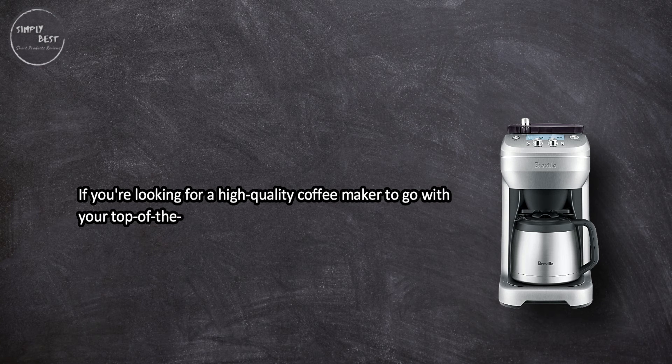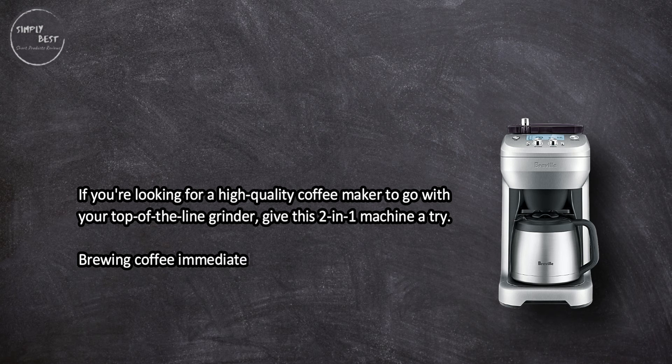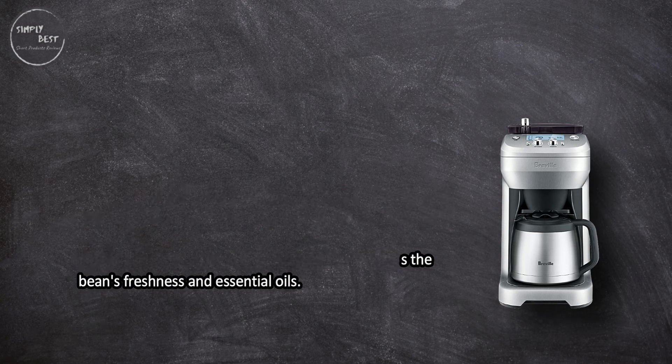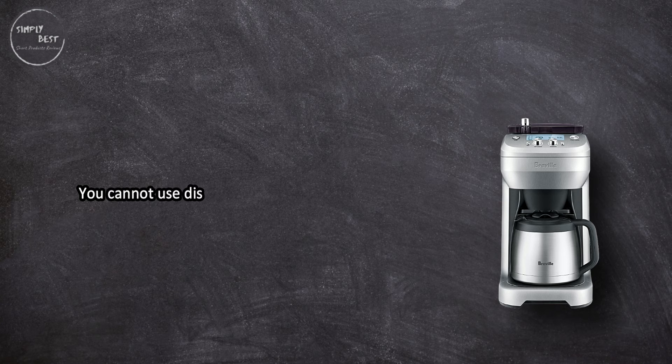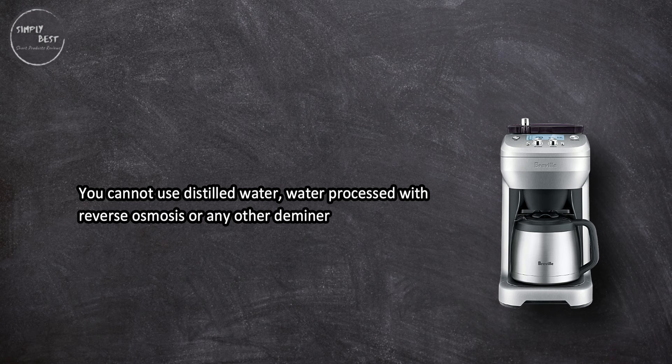Brewing coffee immediately after grinding captures the beans' freshness and essential oils. You cannot use distilled water, water processed with reverse osmosis, or any other demineralized water with this machine. Its sensors require mineral content to operate properly.